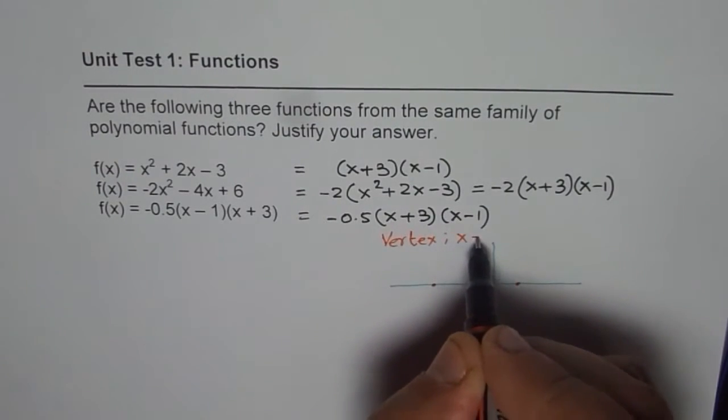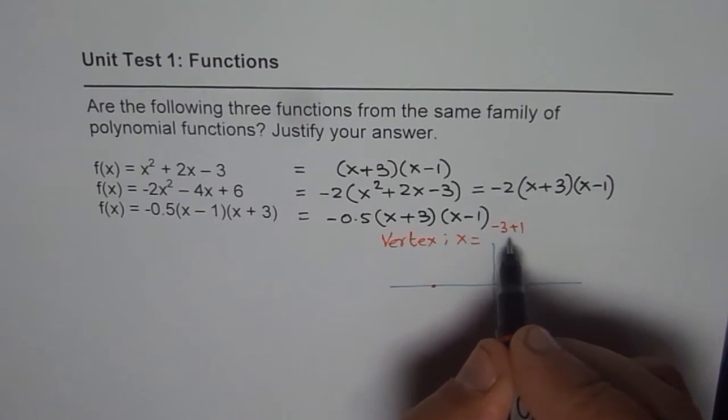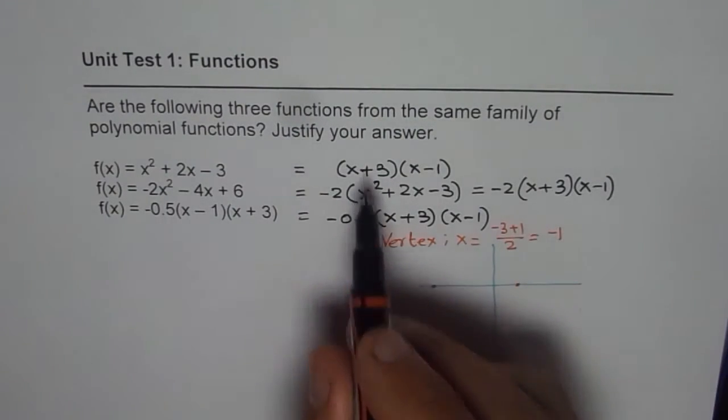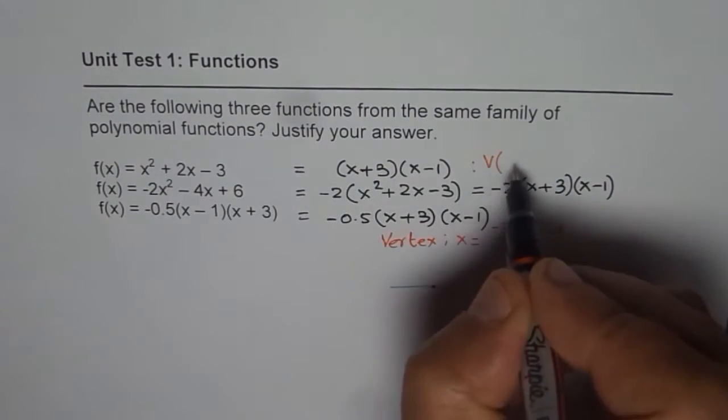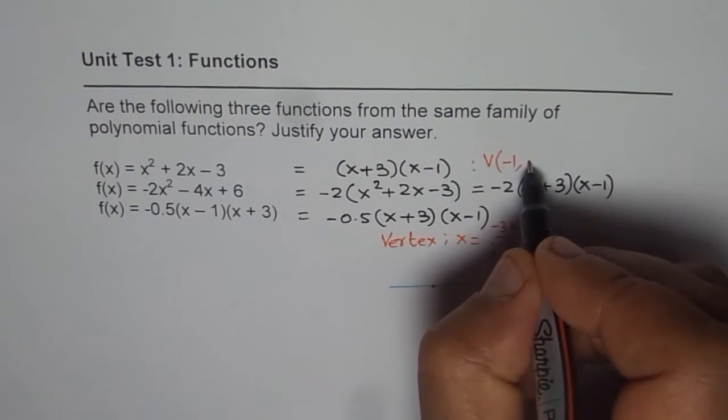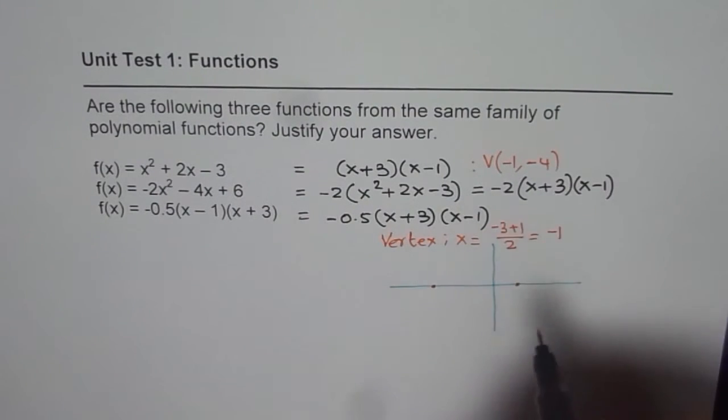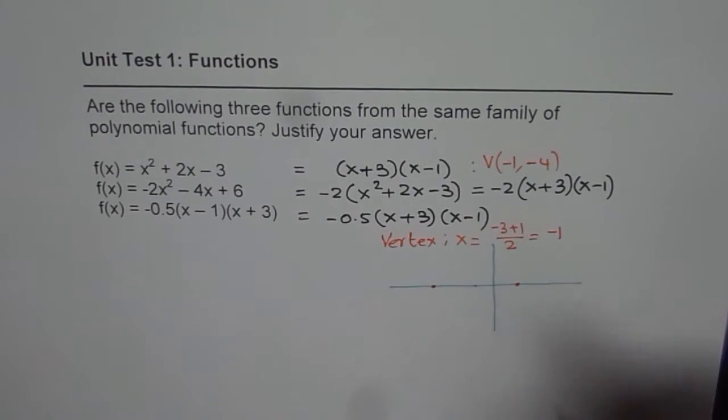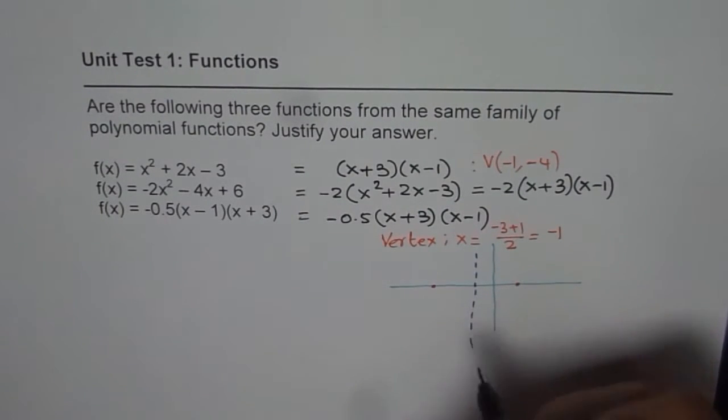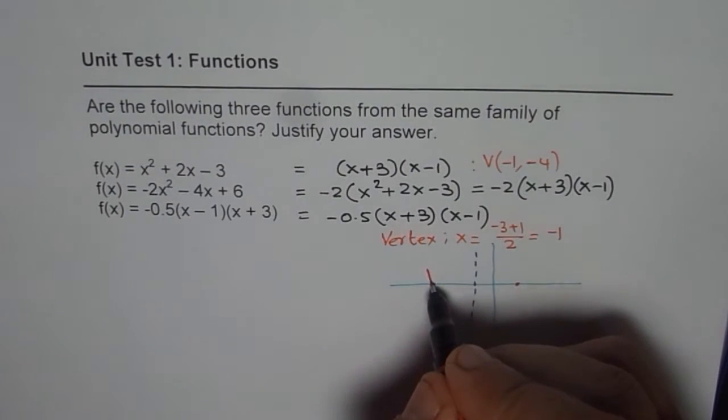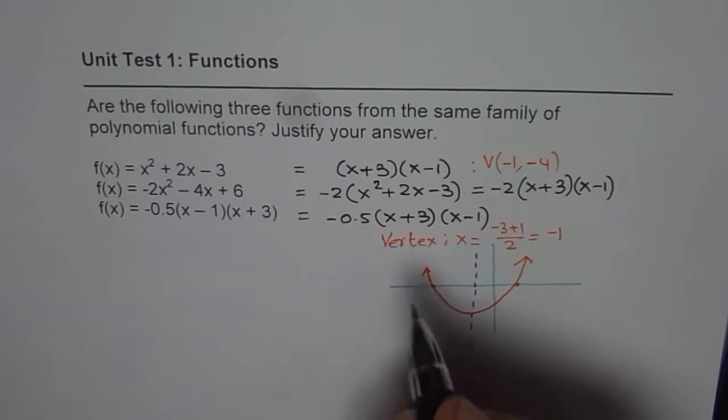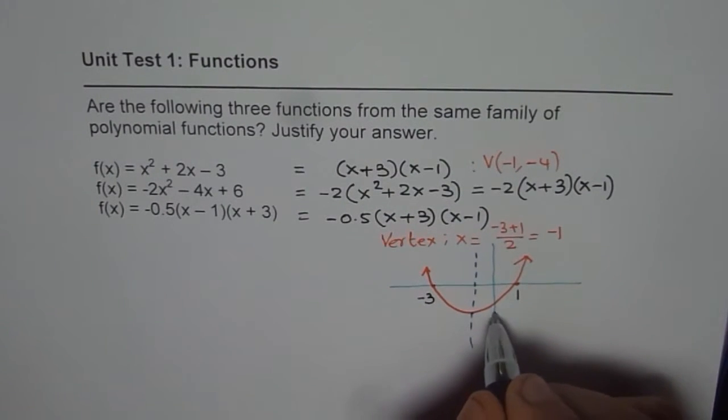Vertex will be at x equals to minus 3 plus 1 divided by 2, which is minus 1. So, if I substitute minus 1 here, what do I get? For the first function, vertex will be at minus 1. Minus 1 plus 3 is plus 2. Minus 1 minus 1 is minus 2. So, it gives me a value of plus 2 times minus 2, which is minus 4. So, I have a vertex at minus 1, which is to say that line of symmetry is going through this point. And the graph is upwards with vertex on this line of axis. The points here are minus 3 and 1, and this point is minus 4.